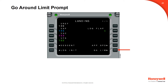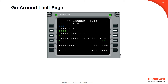Press line select key 6 right to view the go-around limit page selection. The go-around limit page allows the pilot to set the VNAV capture altitudes for all engines or engine out condition, bank limit for engine out condition, and speed and height limits. The go-around speed limit for the clean configuration is shown on line 1. Pilot entry is permitted. Entering delete returns the default value, which is set by the aircraft's personality module.